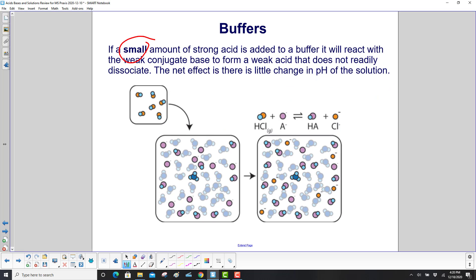If a small amount of strong acid is added to the buffer solution, it will react with the weak conjugate base to form a weak acid that does not readily dissociate. The net effect is little change in the pH of the solution.